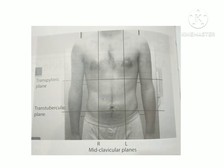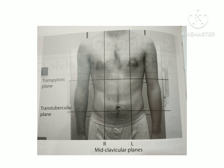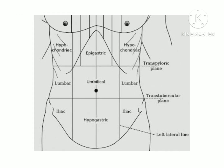Now if you observe, you will see the 9 regions of the abdomen. These 9 regions are created by the planes of the abdomen — the transpyloric plane, trans-tubercular plane, and the mid-clavicular planes. These 9 regions are divided into portions: the upper portion has 3 regions, the middle portion has 3 regions, and the lower portion has the remaining 3.